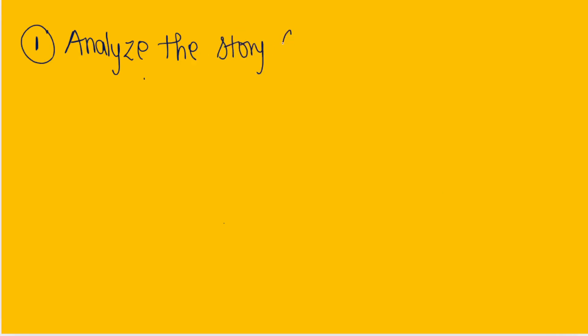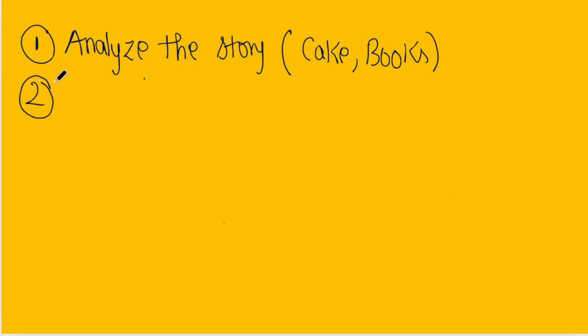Whether it is about cake or whether it is about books, anything that is given in the word problem. The second step is underline the numbers. What are the numbers that are given? Just underline them. This is the second step.